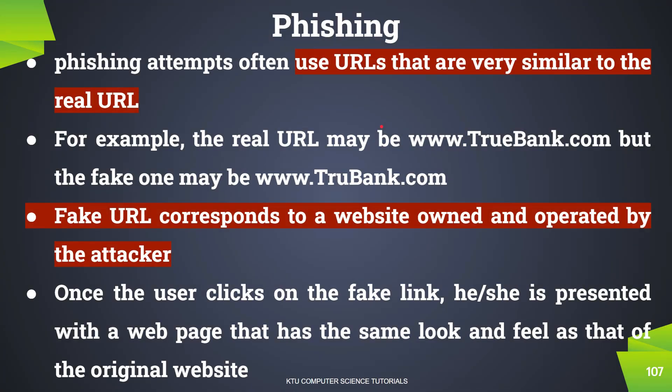Phishing attacks often use fake URLs that look very similar to real URLs. For example, attackers can create a fake URL that closely resembles a legitimate one, such as a fake 'True Bank' URL, making it difficult for users to distinguish the fraudulent site from the real one.